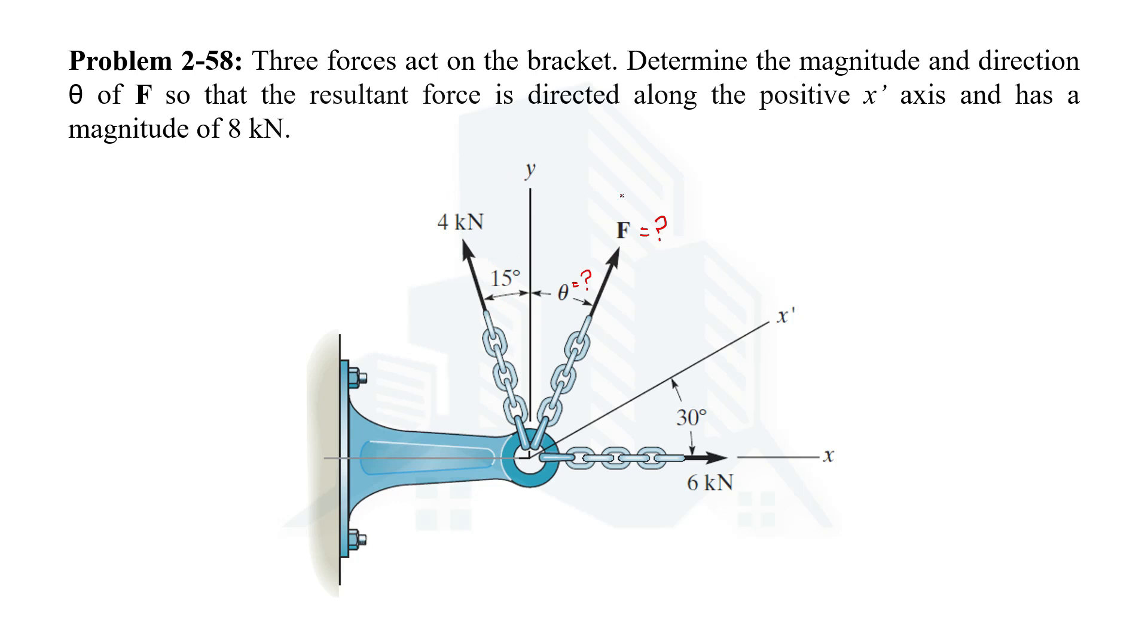These three forces—4 kilonewton, F, and 6 kilonewton—make a resultant force of 8 kilonewton which acts along the x-axis and makes an angle of 30 degrees with the positive x-axis.